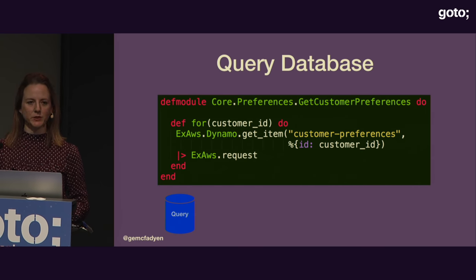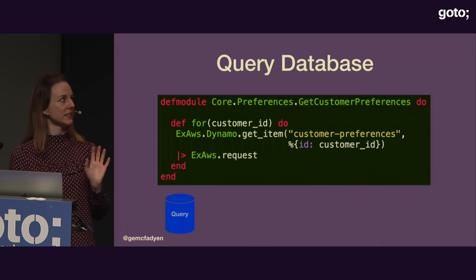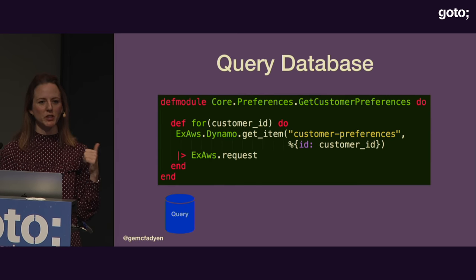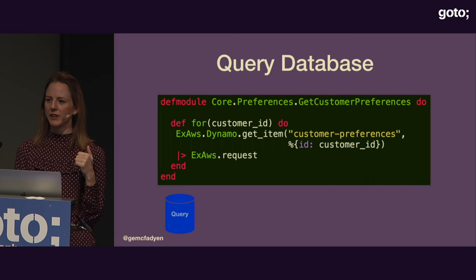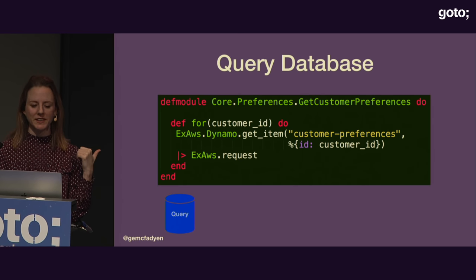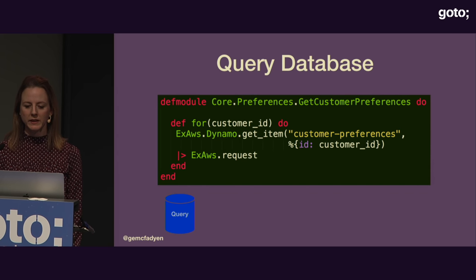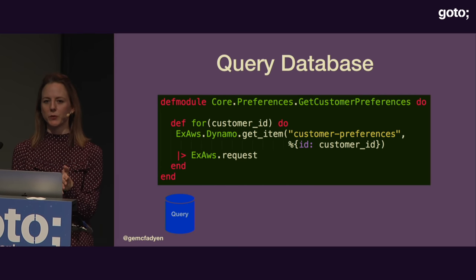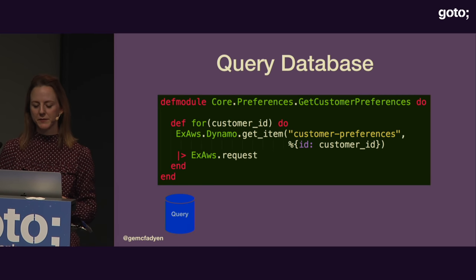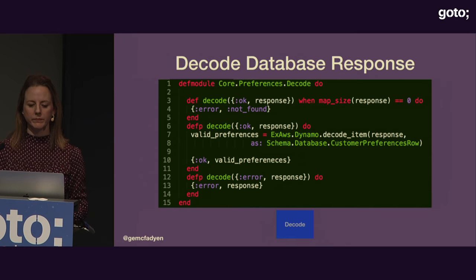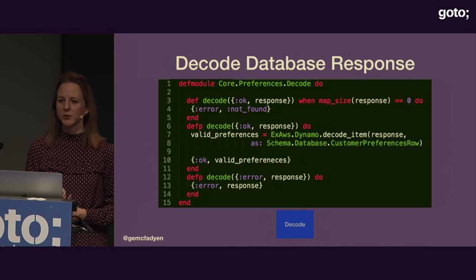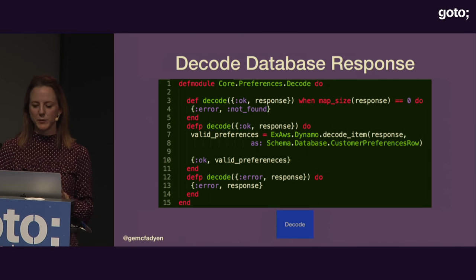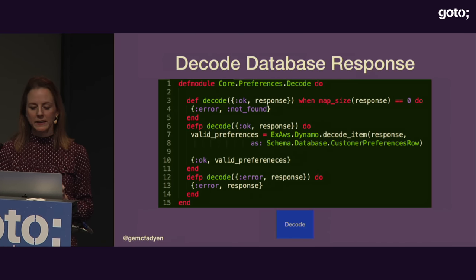We'll start with the functionality which queries the database. Wrapped in its own module, it's far smaller and more focused. We can now test this independently with much more focused tests. If the JSON response changes, we wouldn't have to touch this module at all — it's completely separated. The second step was transforming our raw data response into a struct to strip out surplus data. Looking closely, we're actually just wrapping a library call using the ExAws library to interact with the database.